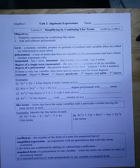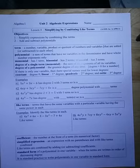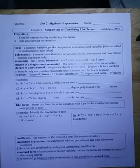A term is either a number, a variable, a product, or a quotient of numbers and variables that are added or subtracted from each other. You look at the pluses and minuses that separate the pieces, and each one of those pieces will be a term. A polynomial is just a sum of those terms.